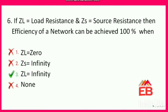Next: if ZL is load resistance and ZS is source resistance, the efficiency of a network can achieve 100% when? Options are: ZL = 0, ZS = infinity, ZL = infinity, or none. The correct option is option 3 — load resistance should be infinity to achieve 100% efficiency. Also, if source resistance is zero, efficiency is also 100%. So whenever load resistance is infinity, efficiency achieves 100%.